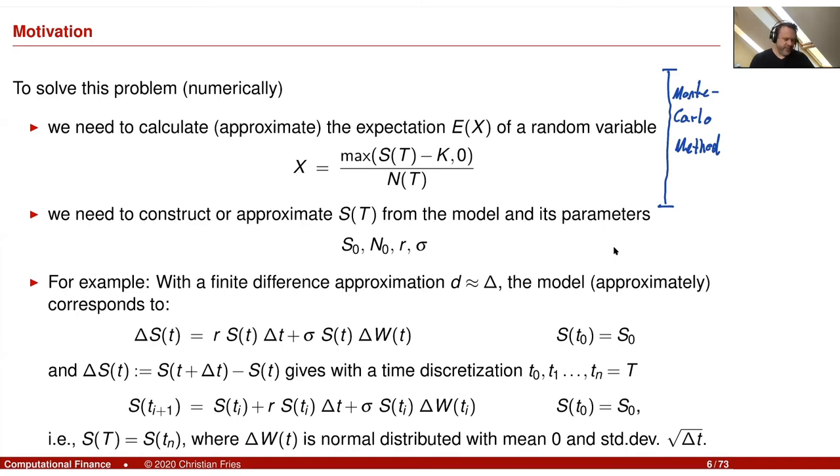And then we have the second part: how can we construct a random variable S of capital T from given model parameters? So these are our model parameters.